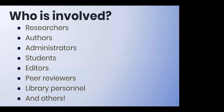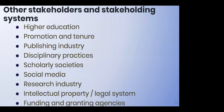Who is involved in this? Researchers, authors who submit and write papers, administrators of research and higher education, students, editors of journals, peer reviewers, library personnel, and others — lots of people are involved. And these are some of the systems that are involved: higher education, scholarly communication for promotion and tenure, the publishing industry, different disciplines and scholarly societies, social media, the research industry, the intellectual property and legal system, and funding and granting agencies that provide money to support research and publications.